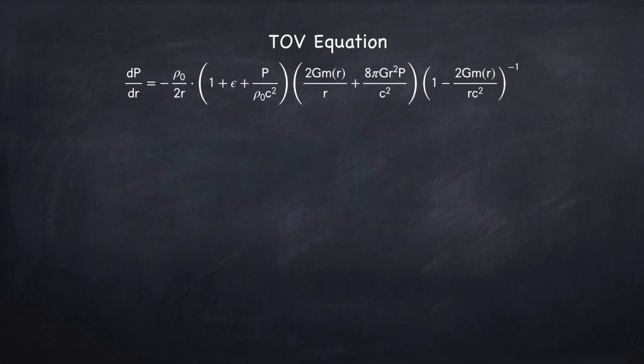Let's start with the TOV equation. This equation is used to determine the pressure gradient throughout the star in hydrostatic equilibrium. So p is the pressure, r is the radial position.